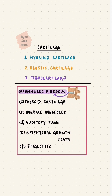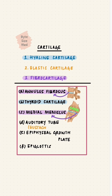The annulus fibrosis is part of the intervertebral disc — it's layers of fibrocartilage. The thyroid cartilage is a laryngeal cartilage; it is hyaline cartilage. The medial meniscus is a shock absorber in the knee joint — it's fibrocartilage. The auditory tube, or the Eustachian tube, is elastic cartilage.